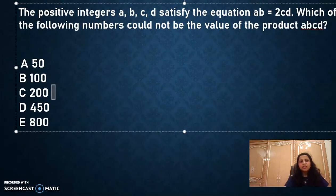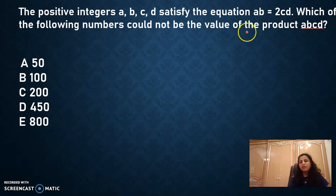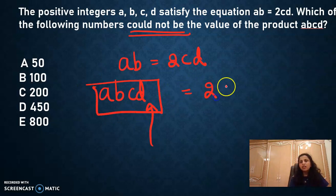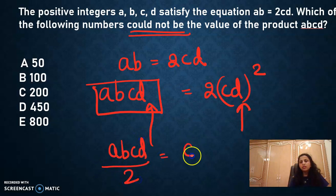So let's do this question. The positive integers a, b, c, d satisfy the equation ab equal to 2cd. It's given ab equal to 2cd. And now they are asking which of the following numbers could not be the value of the product? Could not be. It is a negative question. So just be careful while reading the question. So what will be the value of the product abcd? So let's multiply abcd. So this is my product. I multiplied by cd on the left hand side. So my right hand also will be multiplied. And I got a perfect number. So abcd divided by 2 is a perfect square number.